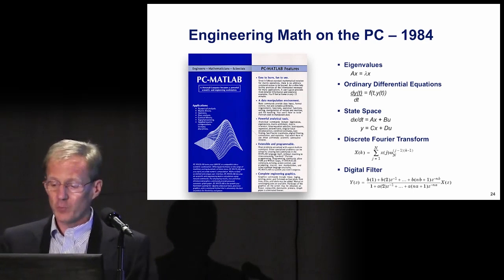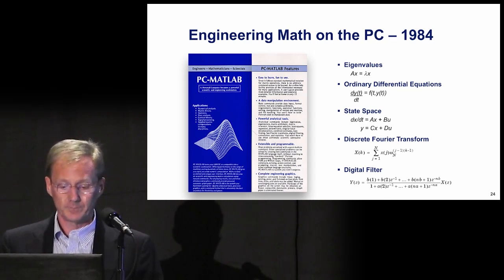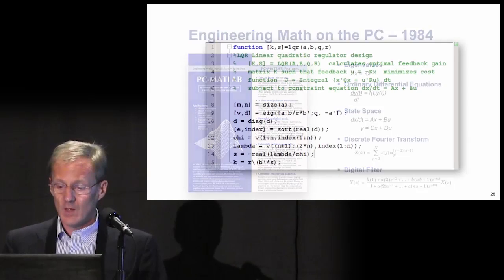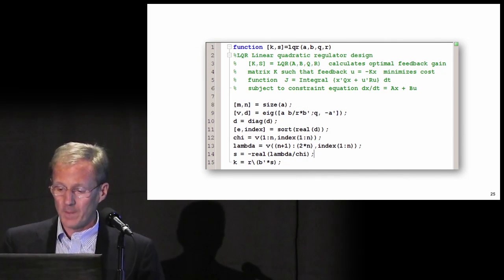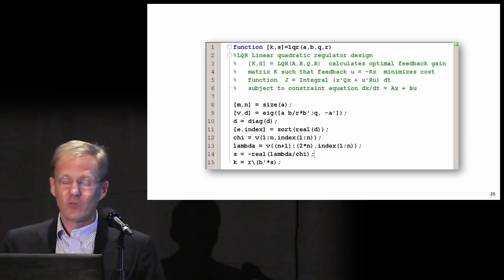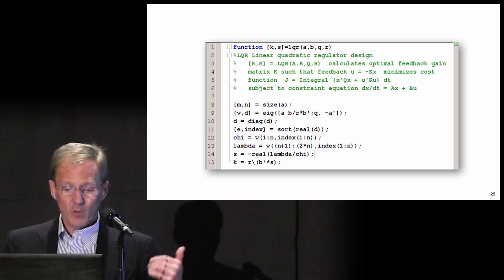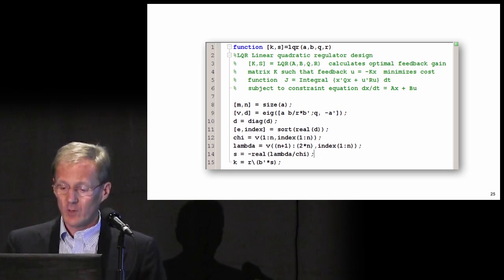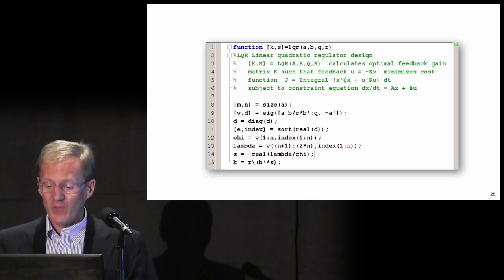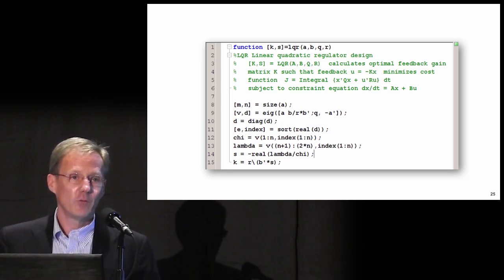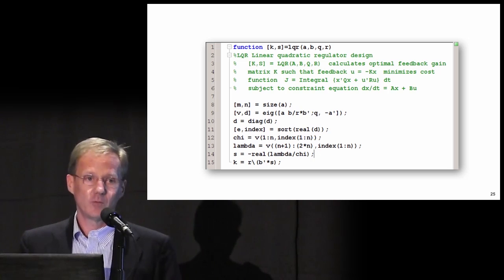This is a picture of the first brochure where we introduced MATLAB on the PC in 1984. Here's a favorite example that captures the power of MATLAB: eight lines of MATLAB code that solve the linear quadratic optimal control problem. All the variables in this code are matrices. There was a Stanford PhD thesis in 1970 by Earl Hall that was thousands of lines of Fortran code to solve this problem, and with MATLAB it's reduced to about eight lines of code.